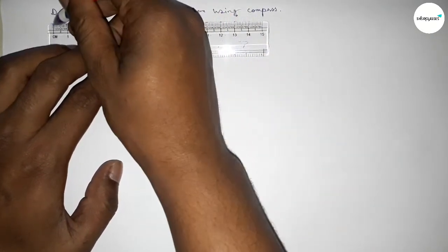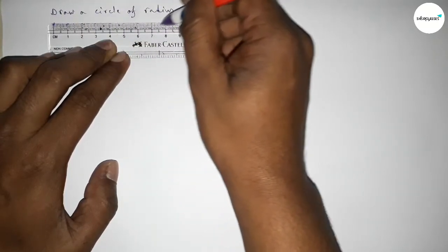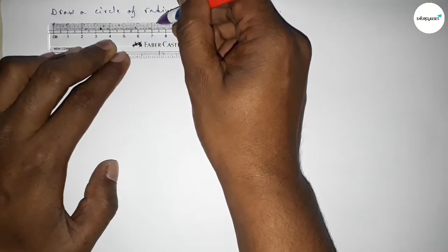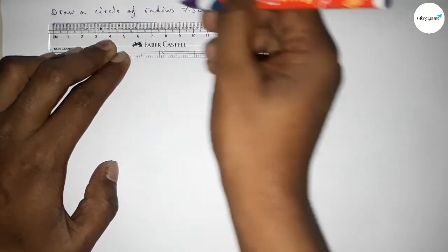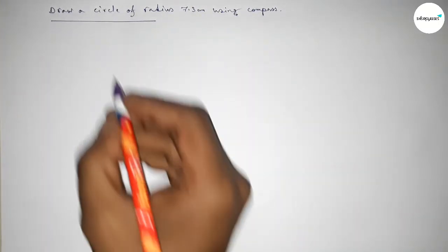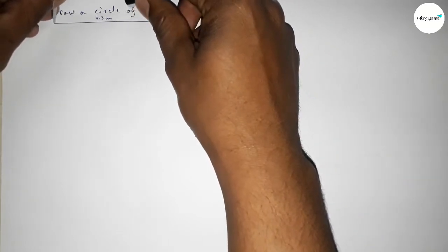of length 7.3 centimeters. Starting at zero: 1, 2, 3, 4, 5, 6, 7, 7.1, 7.2, 7.3. So this is 7.3 centimeters. Now taking a point here, next taking the length 7.3 centimeters